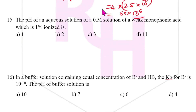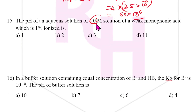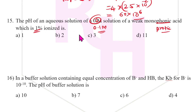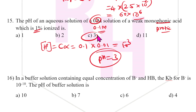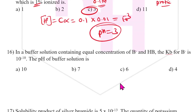Fifteenth question: pH of a 0.1 M solution of a weak monoprotic acid which is 1% ionized. H⁺ = c × α = 0.1 × 0.01 = 1 × 10⁻³. Therefore pH = 3. The answer is C.